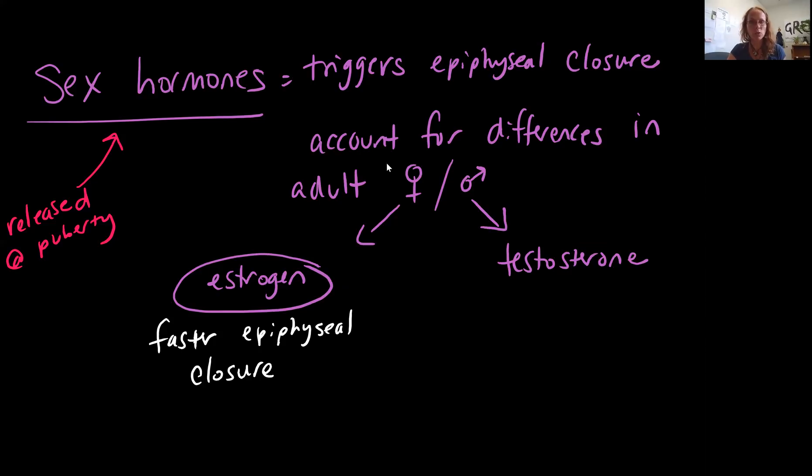Remember epiphyseal closure is talking about when that epiphyseal cartilage gets completely ossified and turned into bone, forming that epiphyseal line. Once that cartilage is turned into the line, then growth, increase in length, that kind of growth has stopped.